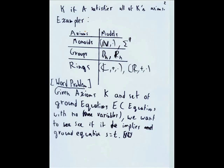Anyways, given the axioms K and set of ground equations E, we want to see if it implies the ground equation S equals T for terms S and T.